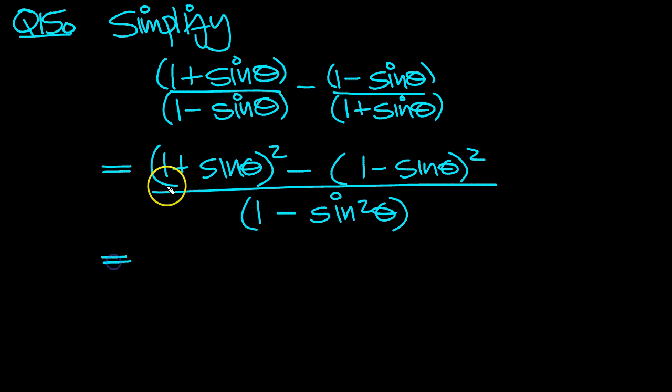Now the top, we get 1 plus 2 sin theta plus sin squared, minus, and I'm going to be careful here because I've got minuses when I expand the bracket and a minus here. So I'm going to do it in one fell swoop.